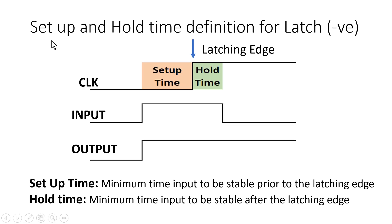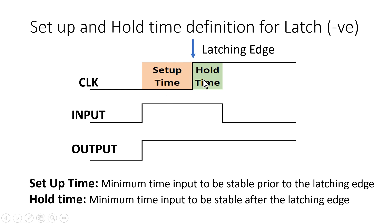Now let us see the setup and hold time in a negative level-sensitive latch. In a negative level-sensitive latch, when the clock is zero, whatever value of input is available will be passed to the output. And as there is a transition on the clock from zero to one, it is called the latching edge. Whatever value of input is available on the latching edge is going to be retained on the output during the time when clock is high. But the input must fulfill the setup and hold time requirement — the input must be stable for some minimum time before this latching edge, which is called setup time, and stable after the latching edge for some minimum time, which is called hold time.